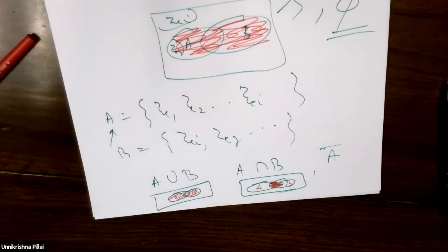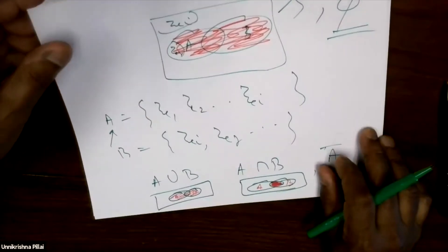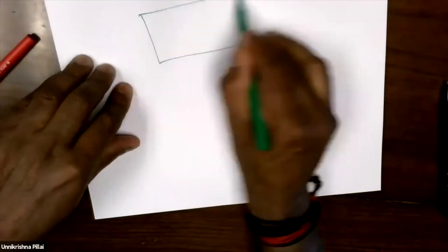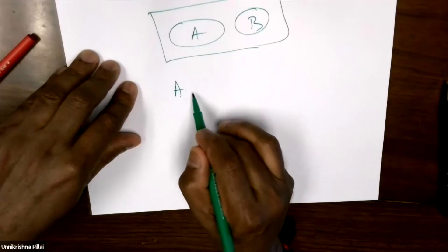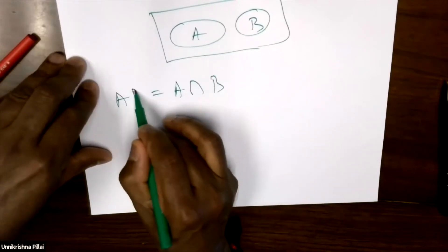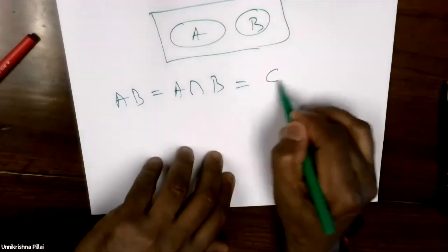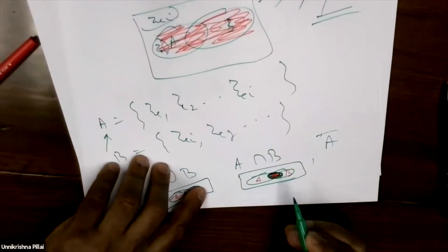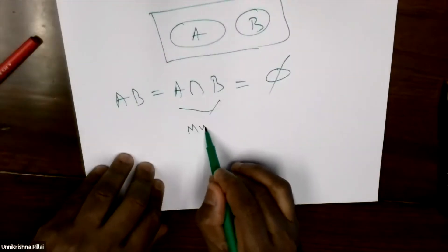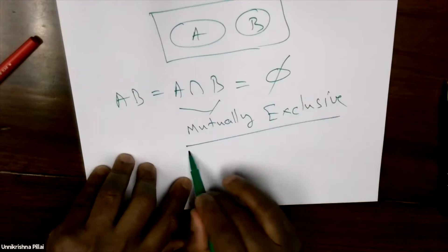The question is: how do you associate the probability of complicated events from simpler events? I also want to look at this case — what is A intersection B when A and B don't overlap? Someone says zero, but it's not zero, it's the empty set — the null set. Physically, A intersection B is wherever they meet, but if they don't meet, you call these two sets mutually exclusive.